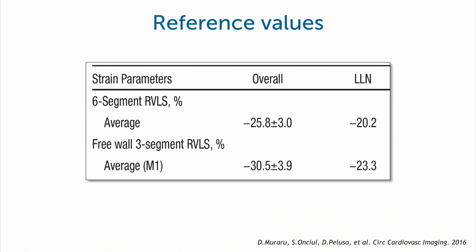You can see that the six-segment global RV longitudinal strain normal value is 25.8 with the low limit of normality minus 20 percent, and the RV free wall longitudinal strain minus 30.5 percent with the low limit of normality minus 23 percent.